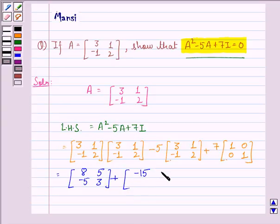[-15, -5; 5, -10], plus the matrix [7, 0; 0, 7].